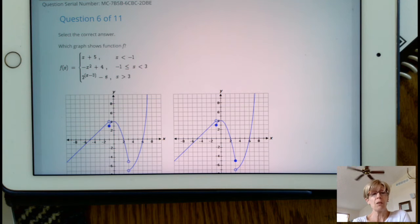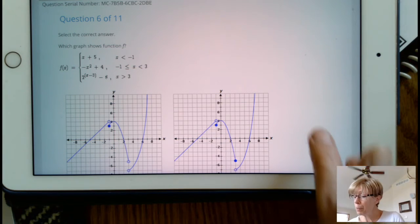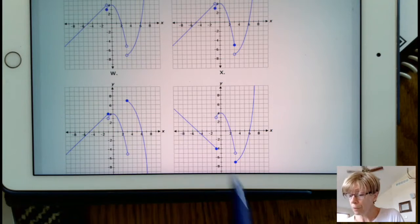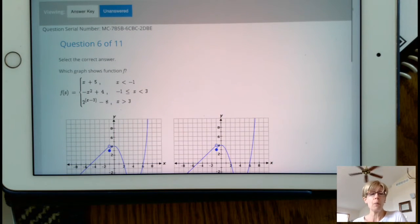I'm starting with that first piece because it's a line. What I notice about x plus 5 is that the number in front of the x is a 1, even though it's not written. So our slope is positive. So we need to be going uphill.